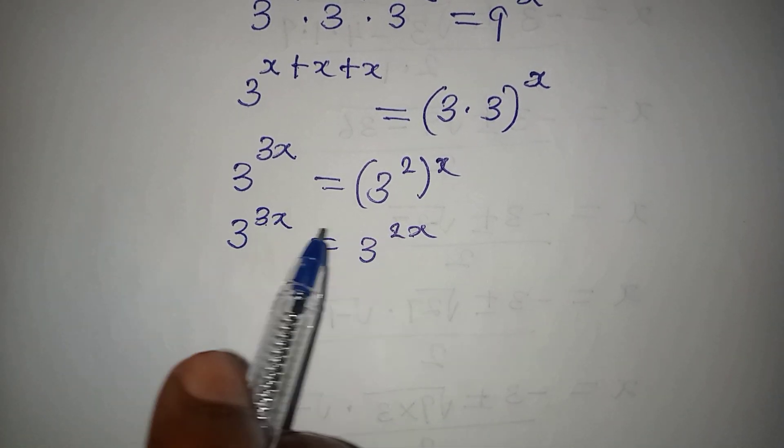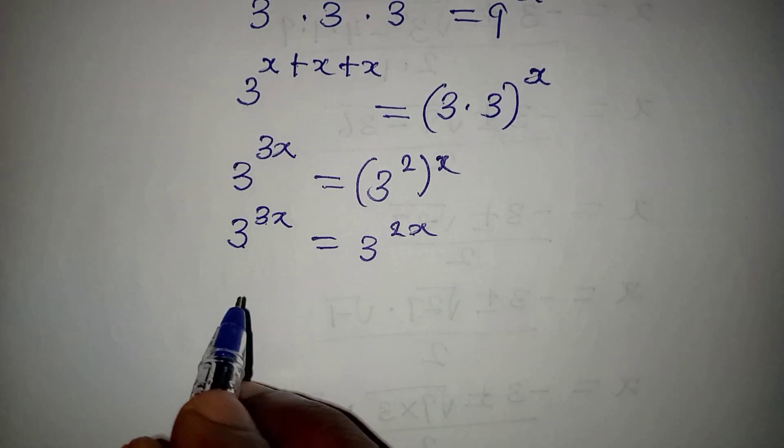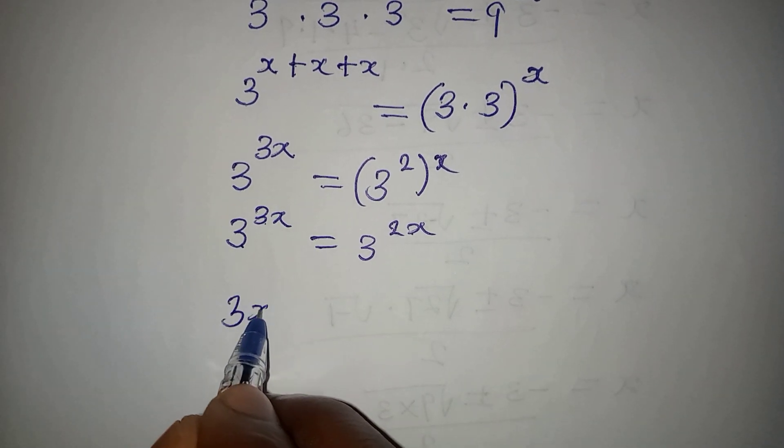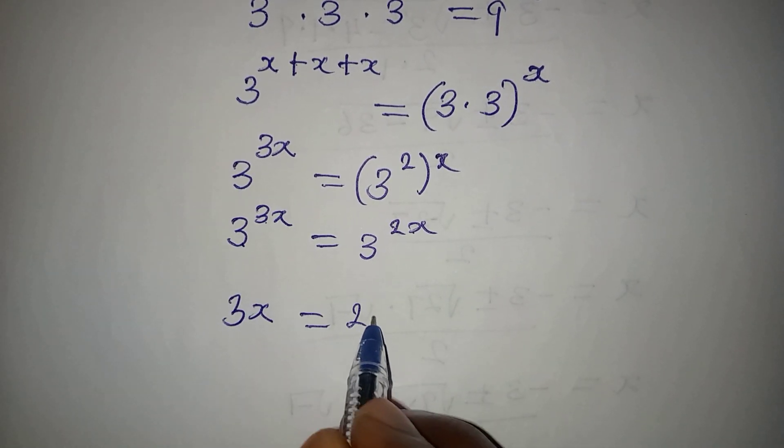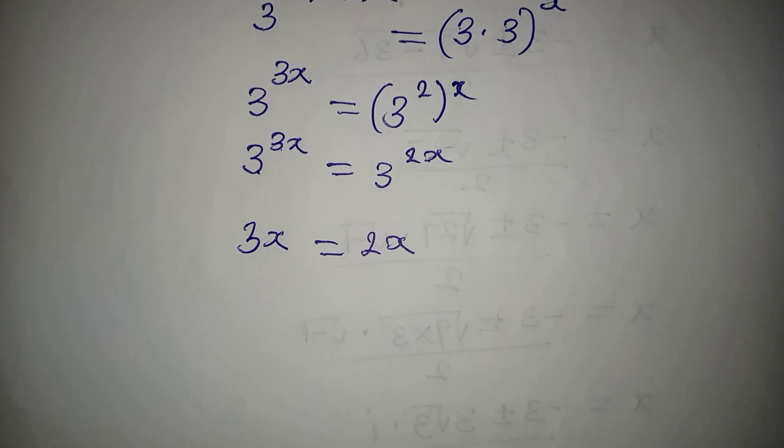Remember that both of them must be equal because the bases are equal. So we are going to say that 3x is simply equal to 2x. Is this even possible?